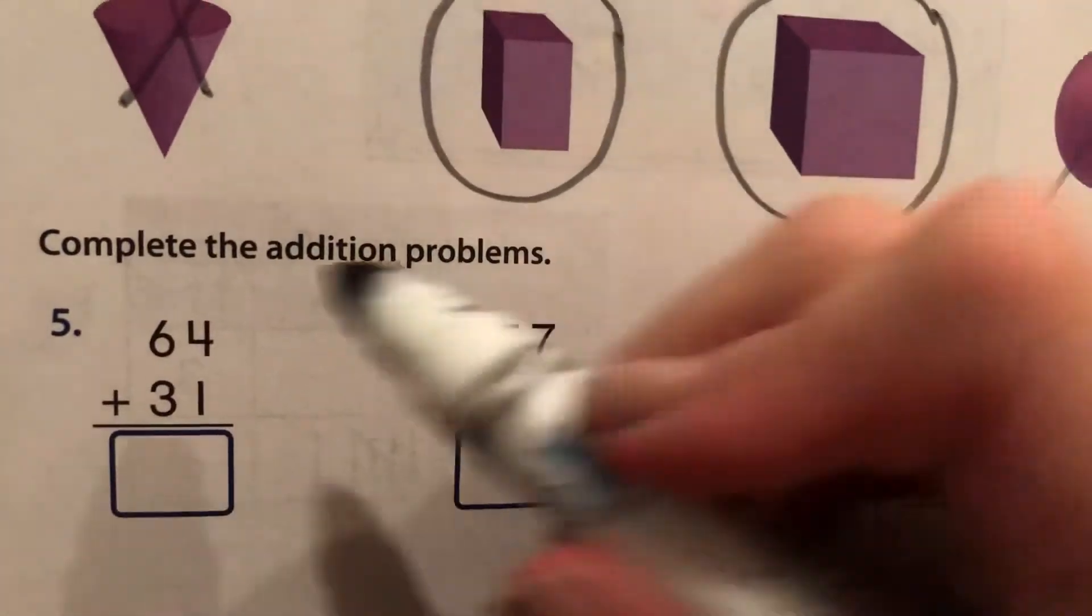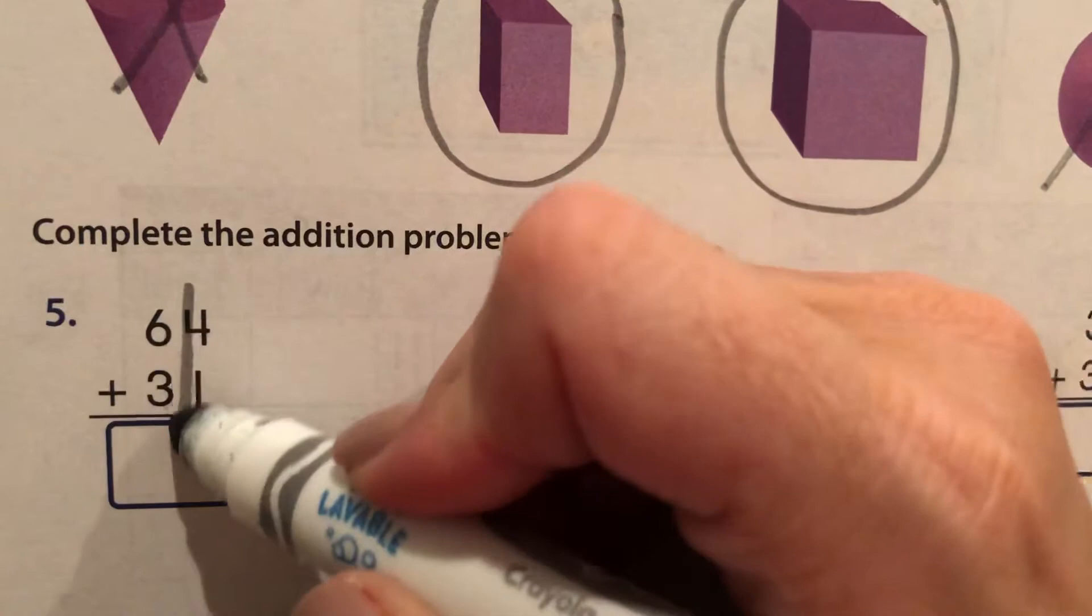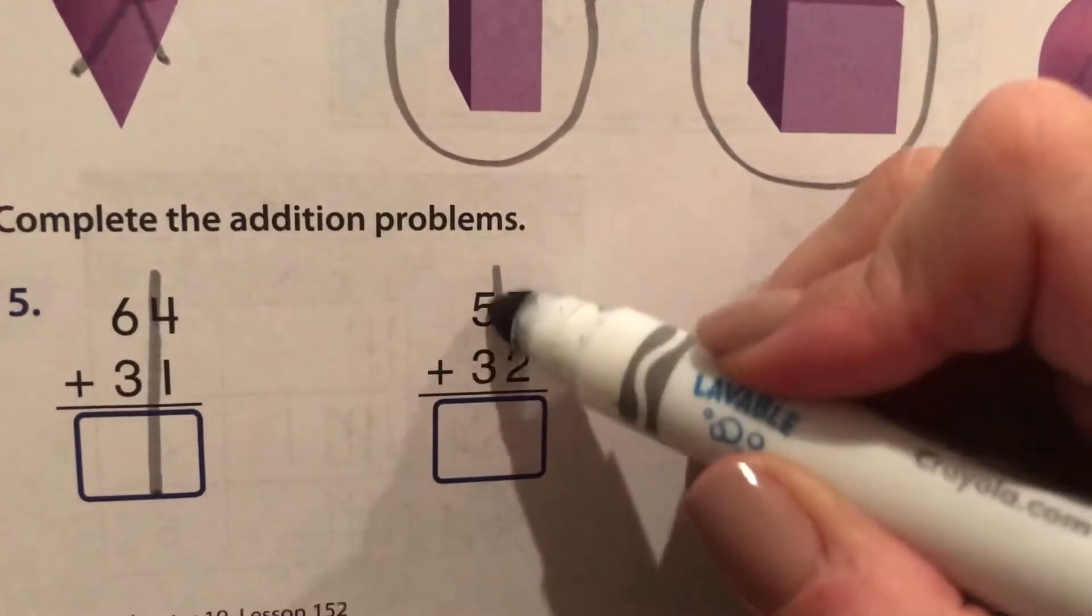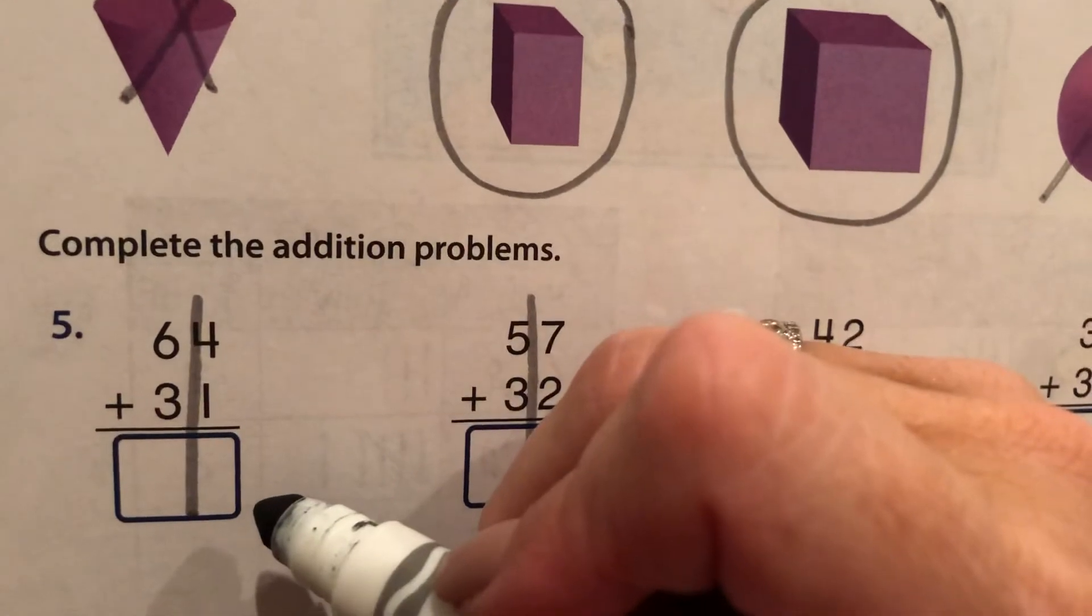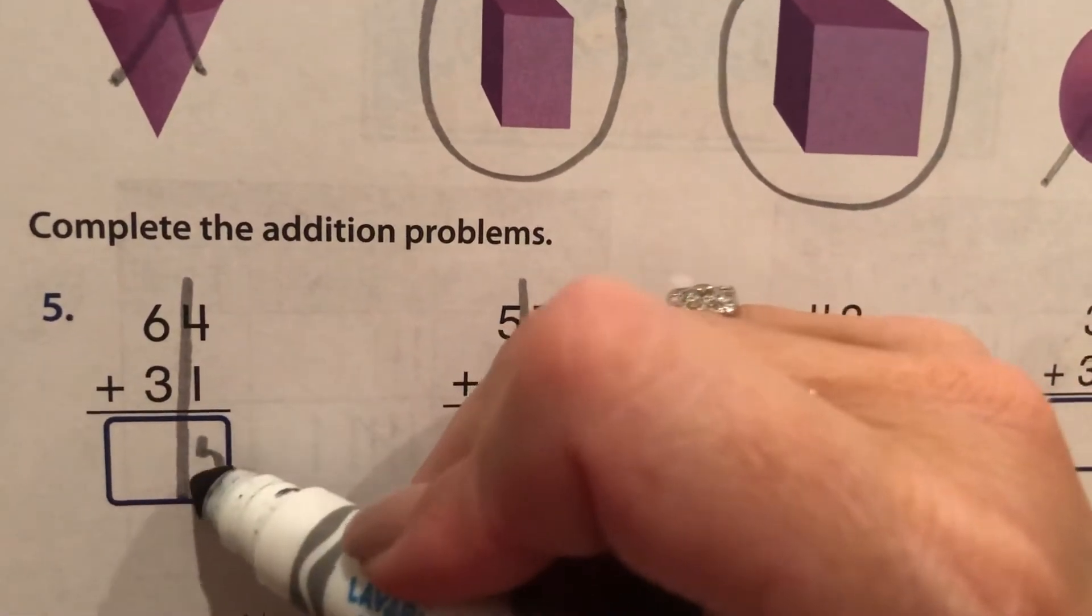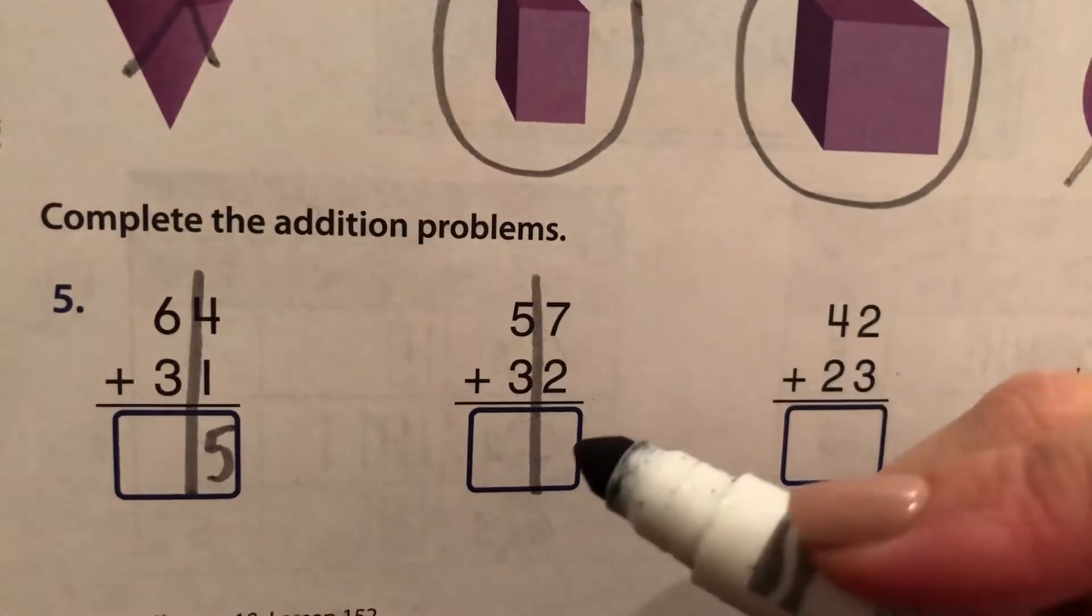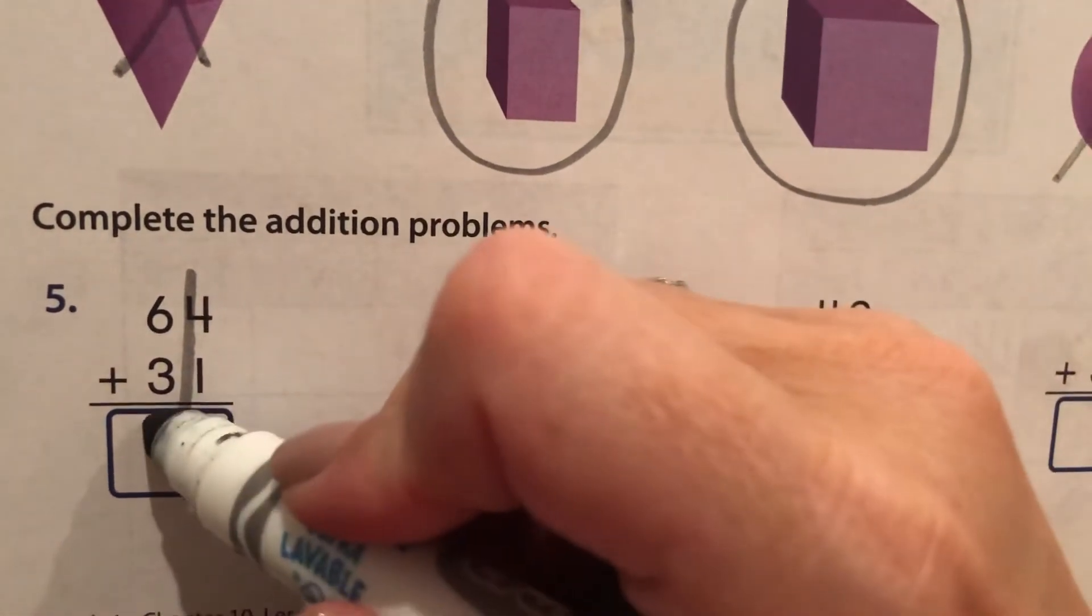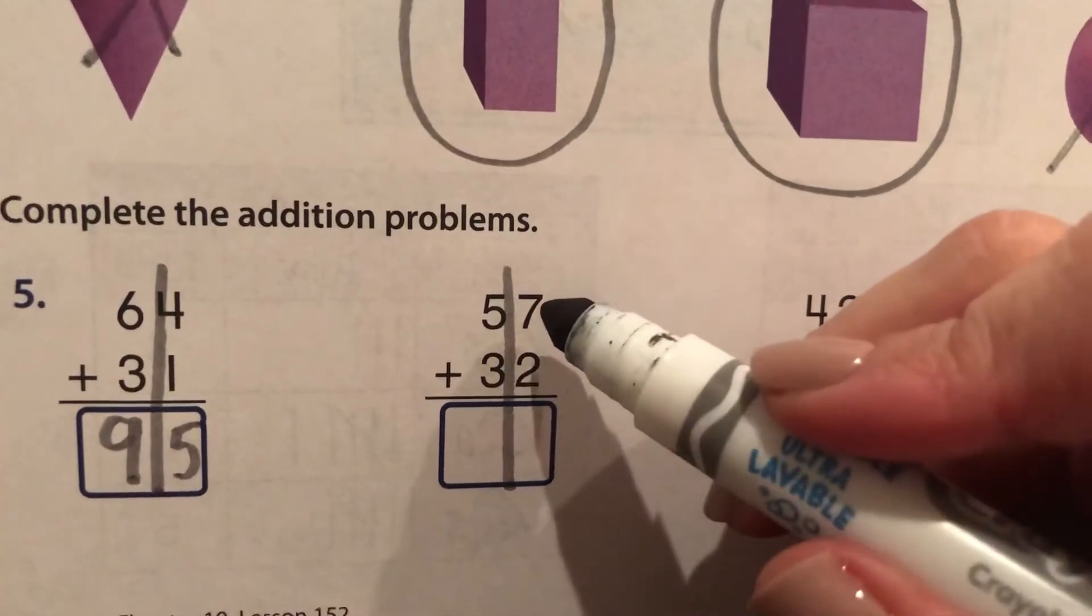Now this says complete the addition problems. Well, let's go ahead and draw some lines to keep us organized. What's four plus one? Five. And six plus three more? Nine.